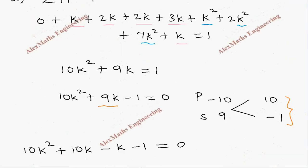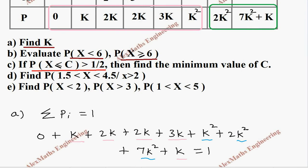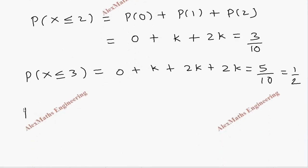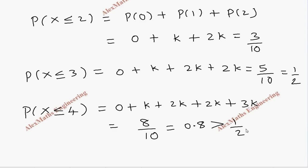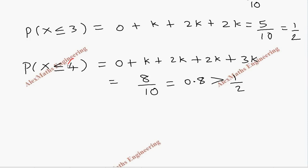Since we need P(X ≤ c) strictly greater than 1/2, and we got exactly 1/2 at c = 3, we try c = 4. P(X ≤ 4) = 0 + k + 2k + 2k + 3k = 8k = 8/10 = 0.8, which is more than half (0.5). Therefore, the minimum value of c is 4.